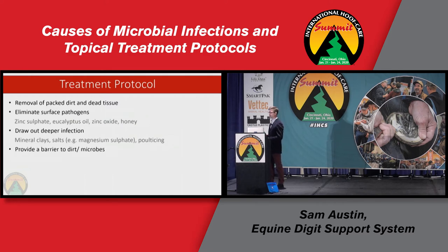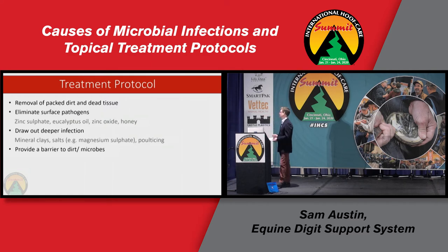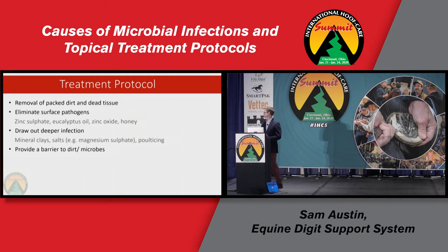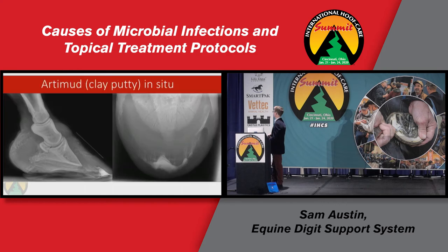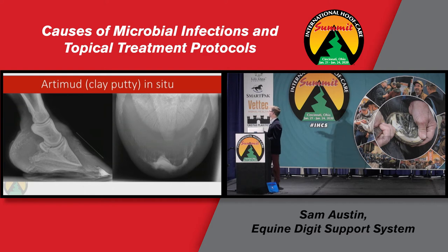You then want to provide some kind of barrier to dirt and microbes. You want to avoid this barrier being oil-based or creating a complete moisture seal. Clay bases or honey bases can be very useful because they don't completely block moisture — they help balance it — but they provide a good physical barrier to microbial infiltration and dirt build-up. Artemid medicated clay putty, for example, can be packed into a white line cavity to treat the tissues whilst preventing any foreign matter getting in there.